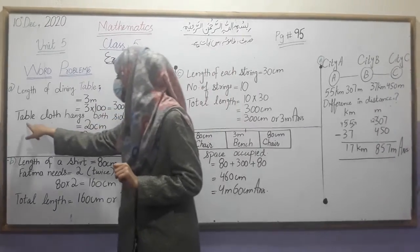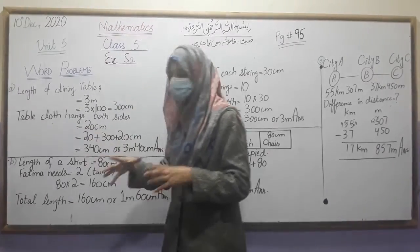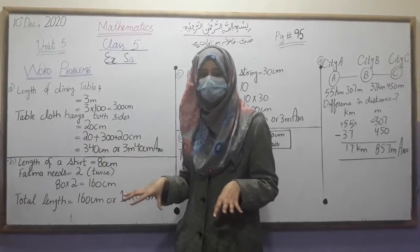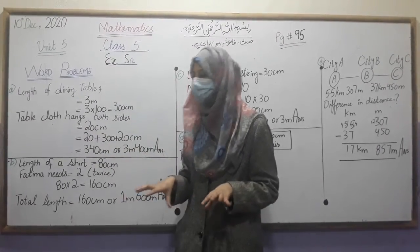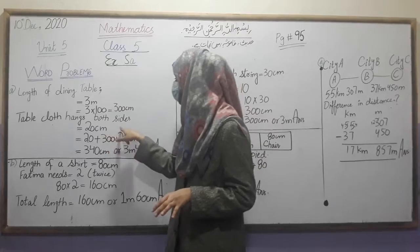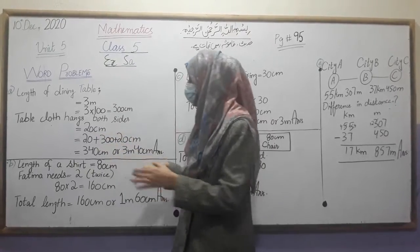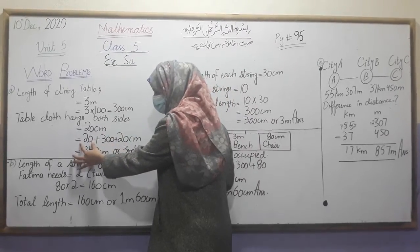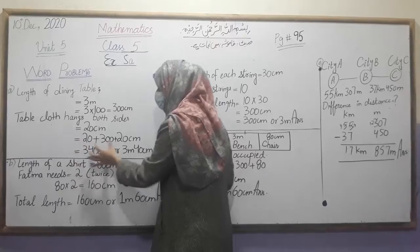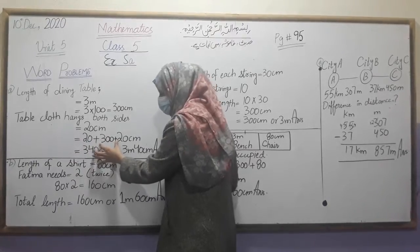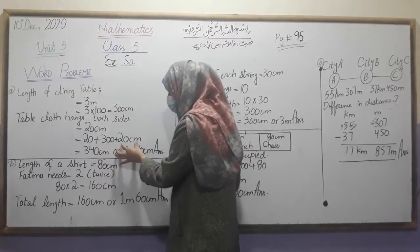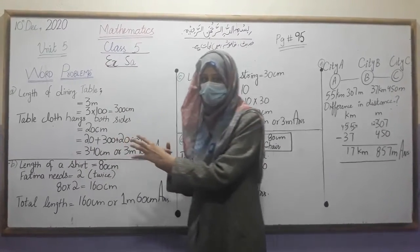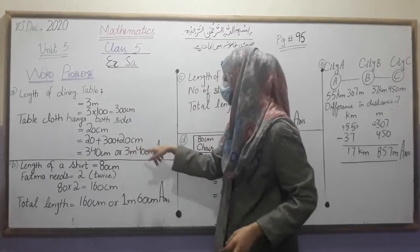We are going to find the cloth needed to cover the whole table on both sides. The other measurement given is 20 cm. We add both sides, including the dynamic environment and the other side.